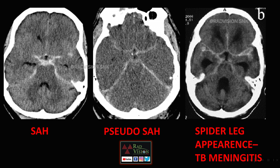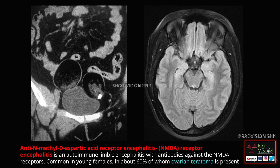In the next interesting case, the patient presented with altered sensorium and seizures. There is hyperintensity in bilateral mesial temporal lobes, and incidentally bilateral dermoids are seen. Whenever you see bilateral dermoids in a case with encephalitis-like features, definitely suspect anti-N-methyl-D-aspartate (anti-NMDA) receptor encephalitis — an autoimmune limbic encephalitis with antibodies against NMDA receptors, common in young females.